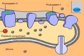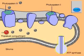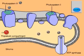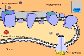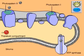The buildup of hydrogen ions inside the thylakoid compartment stores potential energy. This energy is harvested by an enzyme called ATP synthase. As hydrogen ions diffuse through ATP synthase down their concentration gradient, the enzyme uses the energy of the moving ions to make ATP.